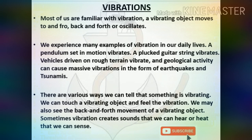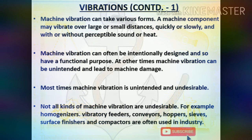Machine vibration can take various forms: a component may vibrate over large or small distances, quickly or slowly, with or without perceptible sound or heat. Machine vibration can be intentionally designed for functional purposes, or unintended and lead to machine damage. Most times machine vibration is unintended and undesirable. However, not all machine vibration is undesirable — for example, homogenizers, vibratory feeders, conveyors, hoppers, sieves, surface finishers, and compactors are often used in industry.